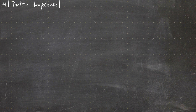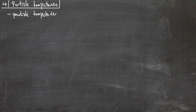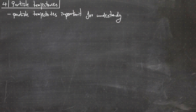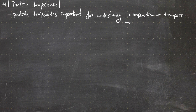Understanding particle trajectories is important for a number of reasons. For example, perpendicular transport losses — perpendicular of course refers to the direction of the magnetic field — and understanding implies that we would also like to control and reduce the losses.